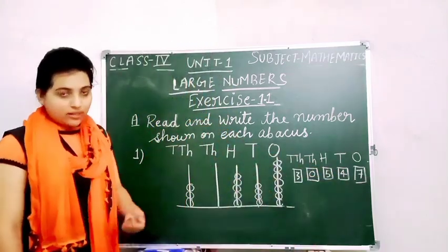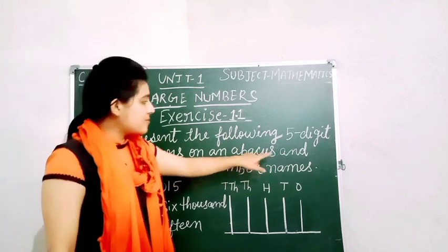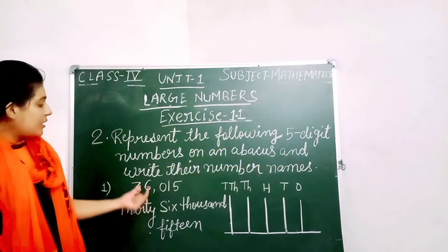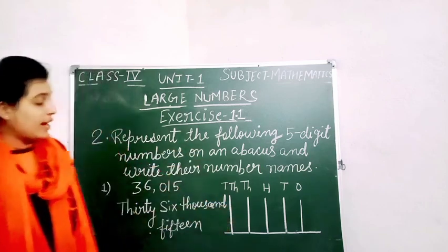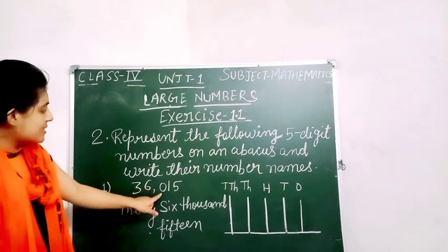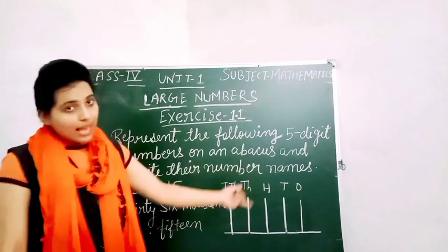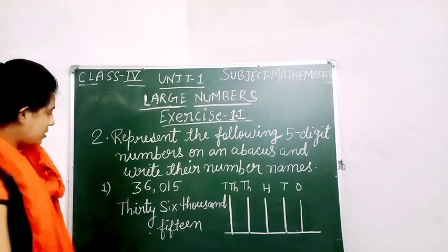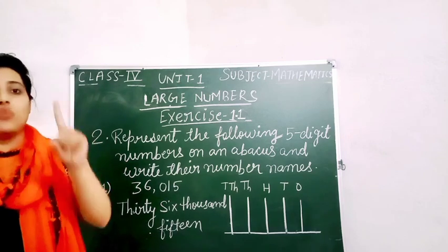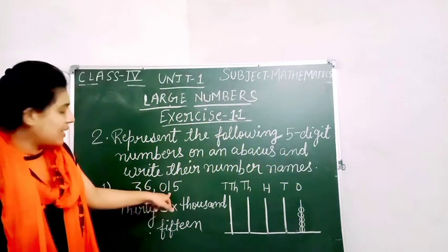Now see the next question: represent the following 5-digit numbers on an abacus and write their number names. The number is given and we need to show it on an abacus and also write the number name. The first question is 36,015. 5 is in the 1's place, so we will draw 5 beads: 1, 2, 3, 4, 5. And in the 10's place the number is 1, so we will draw only 1 bead.